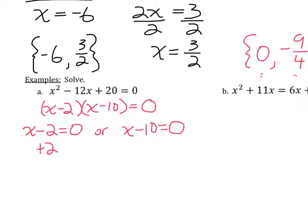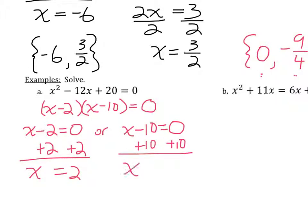I add 2 to both sides to get x equals 2, and I add 10 to both sides to get x equals 10. So my solution set is 2 and 10. Remember, your solution set contains the numbers that, if you plug them back into the original equation, will satisfy both sides of the equation. So you can always check your solutions in these types of examples.